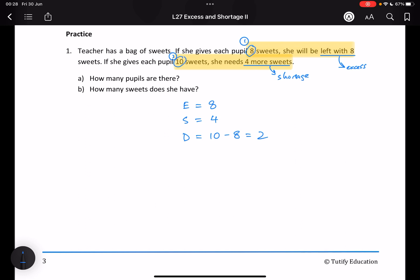The difference is two because in scenario one, I gave eight. Scenario two, I gave ten. The difference is two. So, therefore, if I want to find the number of students, I just take the excess plus the shortage divided by the difference and that will give me six students.